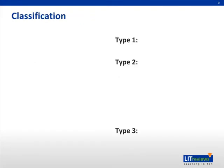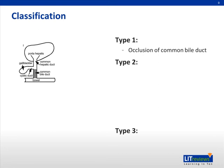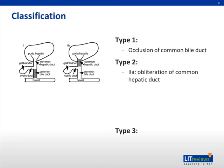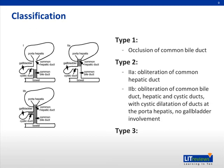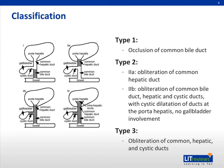Biliary atresia is classified as follows. Type 1 is occlusion of the common bile duct. Type 2a is obliteration of the common hepatic duct. Type 2b is obliteration of the common bile duct, hepatic, and cystic ducts with cystic dilatation of ducts at the porta hepatis and no gallbladder involvement. Type 3 is obliteration of the common hepatic and cystic ducts, as demonstrated in the following image.